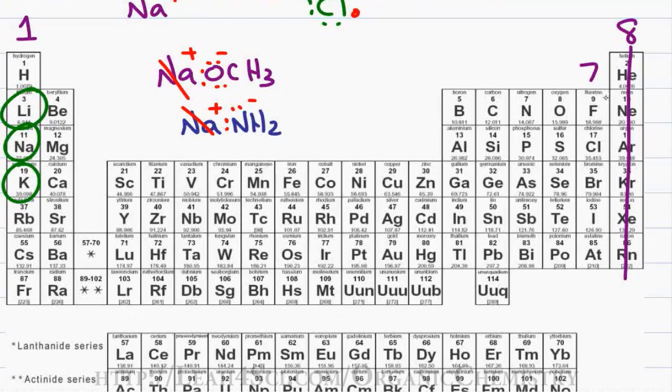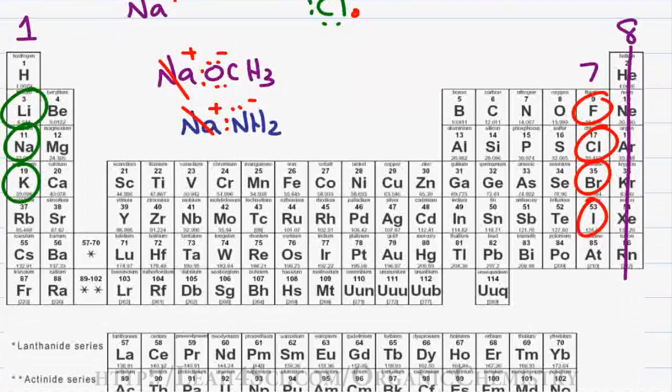We already know that the halogens, fluorine, chlorine, bromine and iodine need one more electron to complete their octet forming a minus one ion. In organic chemistry, they'll show up as both covalently bound which we'll talk about shortly and ionically bound.